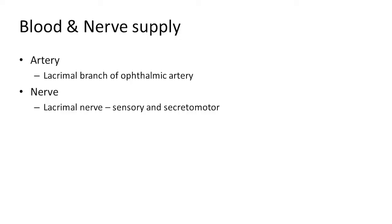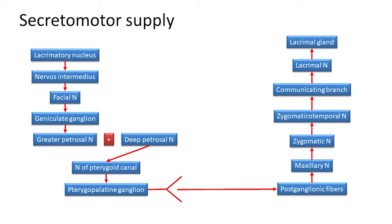The gland is supplied by the lacrimal branch of the ophthalmic artery and the lacrimal nerve. This lacrimal nerve is both sensory and secretomotor. For the secretomotor supply, the signal starts from the lacrimatory nucleus in the pons, then passes through the nervus intermedius to the facial nerve, then to the geniculate ganglion, and from there to the greater petrosal nerve. The greater petrosal nerve unites with the deep petrosal nerve to form the nerve of the pterygoid canal, which reaches the pterygopalatine ganglion, where it is relayed.